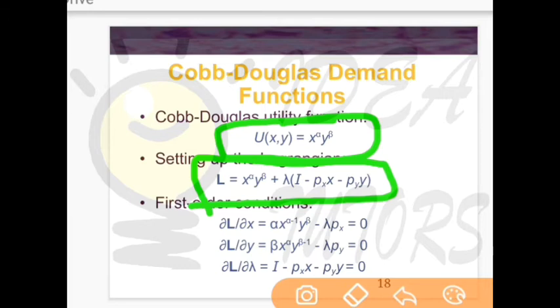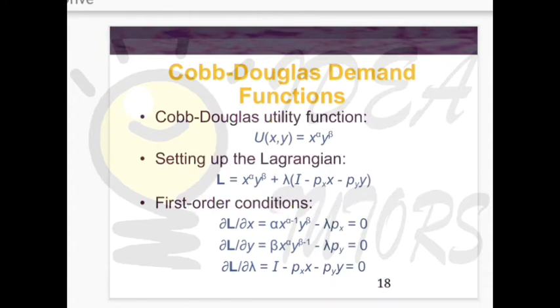The basic idea is: if you have any utility function in your exam, write that function first as it is, then put an addition sign, then lambda times the budget constraint — that is, income I minus px (the price of good X) times x (the quantity of good X), minus py (the price of good Y) times y (the quantity of good Y). After setting this equation, we are done setting up the Lagrange.